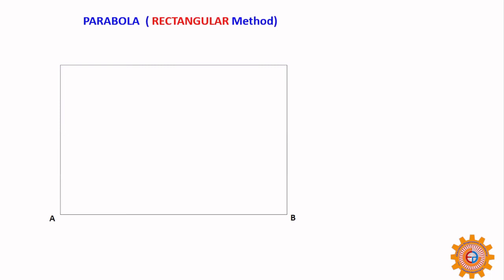This is parabola by the rectangular method. Take this rectangle and divide AF into equal parts - you can take five parts also. If you divide AF into four parts, AD also has to be divided into four parts. That is simple.